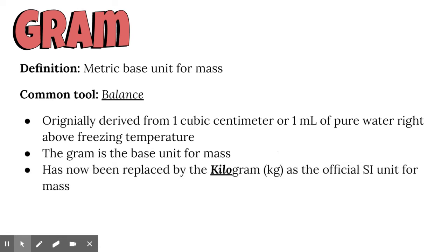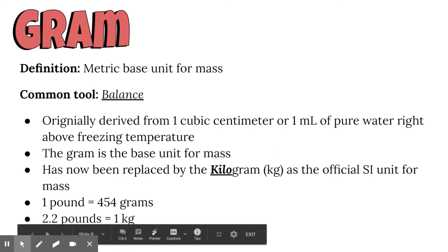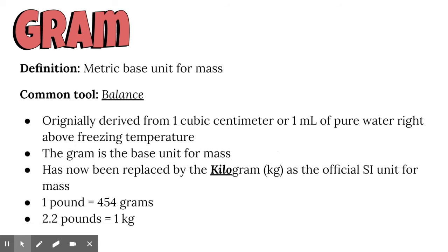A gram is actually a really small measurement. Not many things we interact with weigh one gram. So we use the kilogram a lot for the official SI unit for mass. Things like you and I would be measured in kilograms. To give you an idea, one pound is about 454 grams, or two pounds equals about a kilogram. We'll probably talk a lot more about kilograms in the long run.